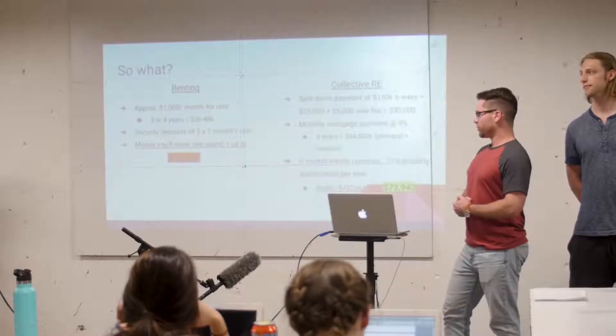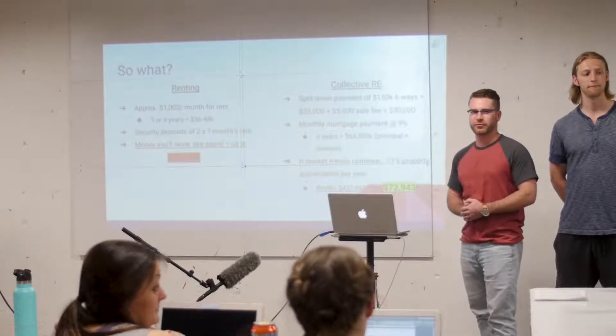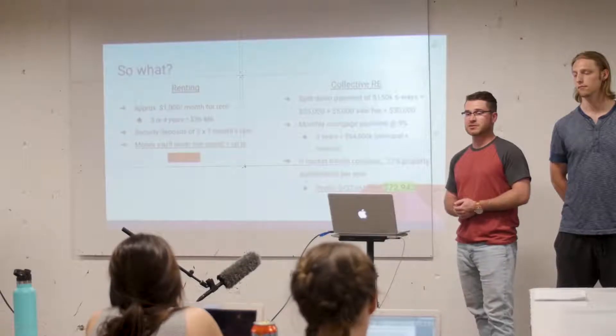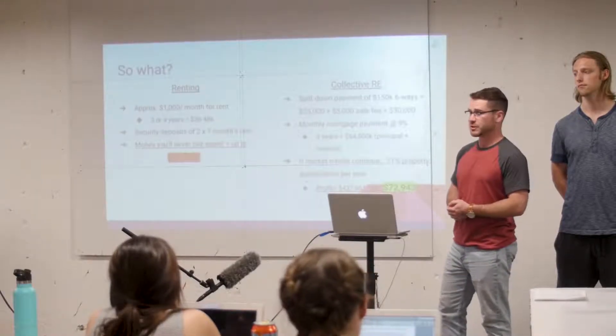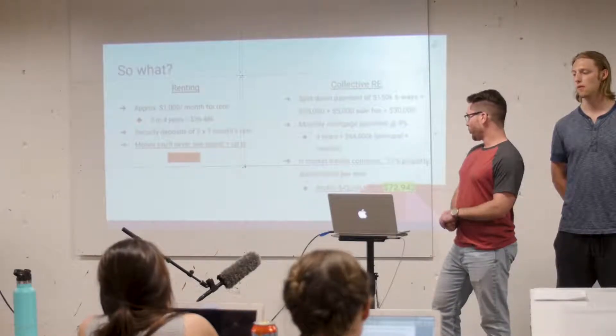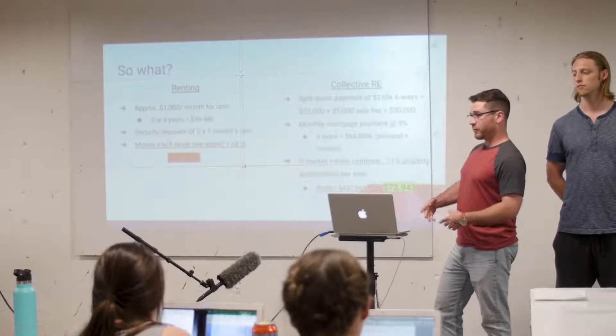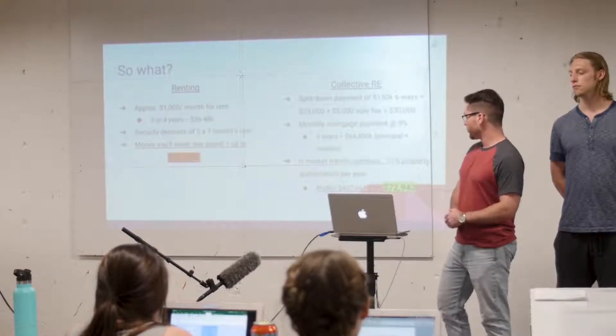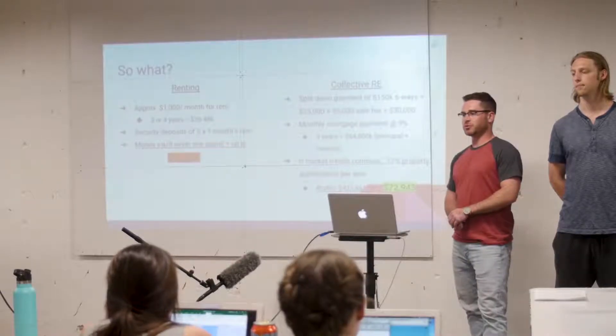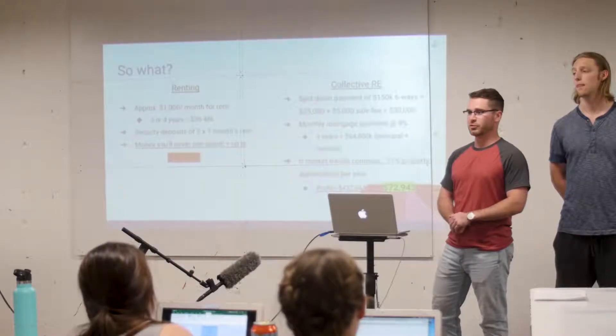But this is actually where it becomes profitable. So we're really banking on the market to continue to appreciate. And in Colorado over the past three or four years, housing or property values have appreciated about nine to 10% and it's even higher in Boulder, about 11 to 12%. So if the trends continue at 11% appreciation a year, the property would be worth about 1.4 million. If everyone in the house decided to sell, the profit would be $437,661. If you just wanted to do your portion, it'd be $72,943. And that's just profit back into your pocket, gross profit.